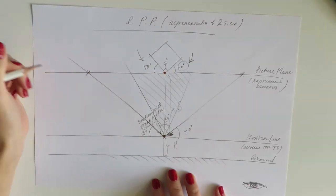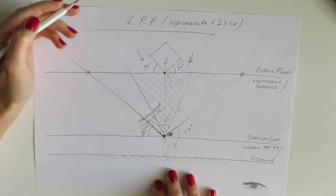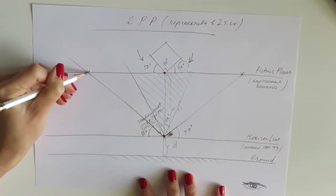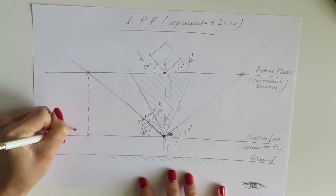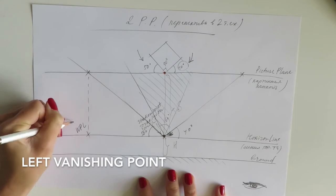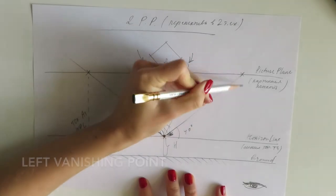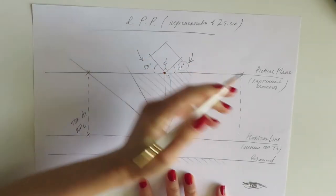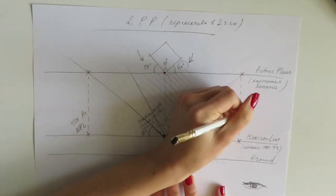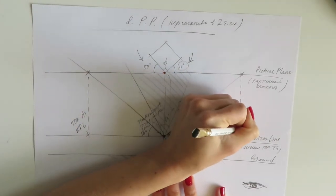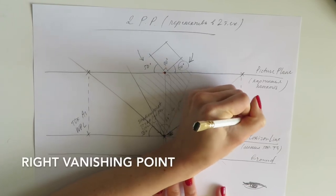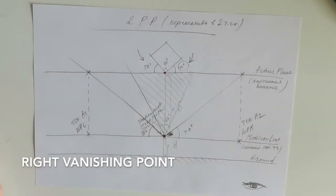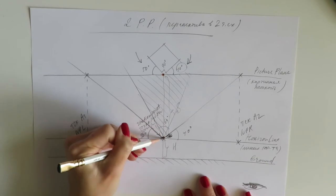And then bring it straight back down to the horizon line, and that's your vanishing point left. Same exercise over here. We've already drawn a line 40 degrees up to the picture plane, and now you will bring it straight down to the horizon line. So that's your right vanishing point.